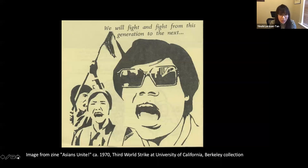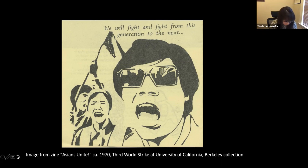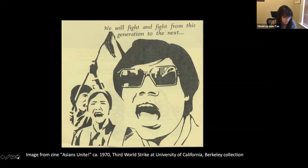What I'm showing you here is an image from a zine called 'Asians Unite' from 1970, from a publication at University of California, Berkeley. It's from around the time that the term Asian American was coined — in fact by a UC Berkeley grad student named Yuichi Ichioka, in his apartment in Berkeley in 1968. He was the founder of the Asian American Political Alliance, and he and his wife were civil rights workers who had worked in the American South. They were thinking about political activism, the anti-war movement, and wanted to bring some of those ideas to their own Asian American community.